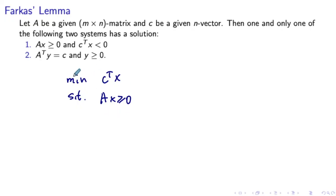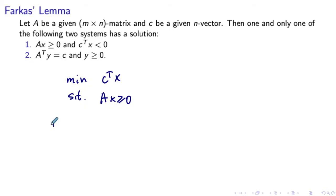What can we say about this LP? Looking at the right-hand side of this constraint, it's 0, meaning that x = 0 is always going to be a feasible solution. If I multiply any matrix A by a zero vector, I get 0, which is clearly ≥ 0. We have identified at least one feasible solution, x = 0, which means our LP can either be optimal or unbounded. So the first possibility is optimal, and the second possibility is unbounded.